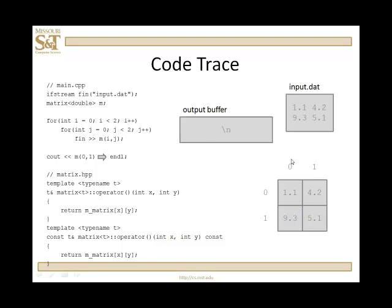I go to the next statement, the cout statement, putting a new line into the output buffer, then m(0,1). Because I am simply going to access and read that element, the compiler realizes that the const version of the accessor is to be used. It jumps into the code for the const version of the overloaded function evaluation operator passing in 0 and 1 for x and y.